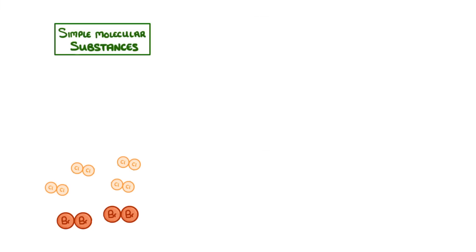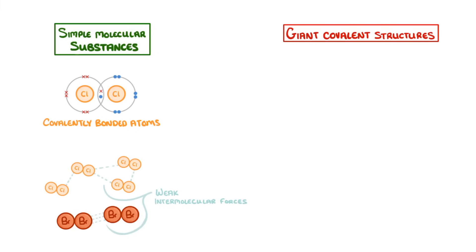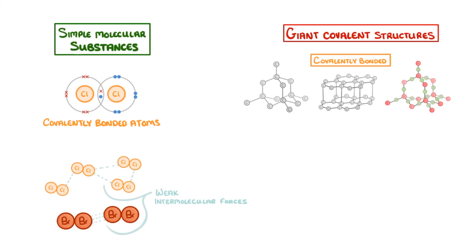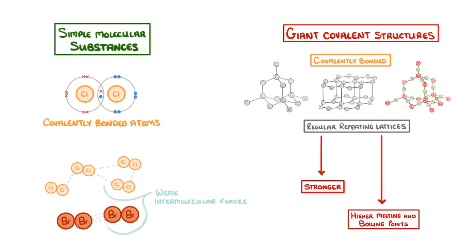Now, the key thing to take away from this video is that simple molecular substances are small molecules that are made up of just a few covalently bonded atoms, and the separate molecules are only joined together by weak intermolecular forces. Meanwhile, in giant covalent structures, all of the atoms are covalently bonded in regular repeating lattices, which makes them much stronger, and gives them much greater melting and boiling points.